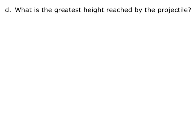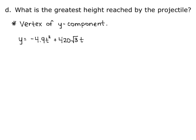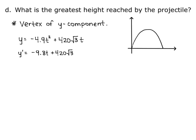For part d, what is the greatest height reached by the projectile? We're looking for the vertex of the y component. Y equals negative 4.9 t-squared plus 420 square root of 3 times t. We know this is an upside-down parabola: the projectile shoots up into the air, follows a parabolic path, and then comes down to the x-axis, or the ground. To find the point where the vertex occurs, I take the derivative of y.